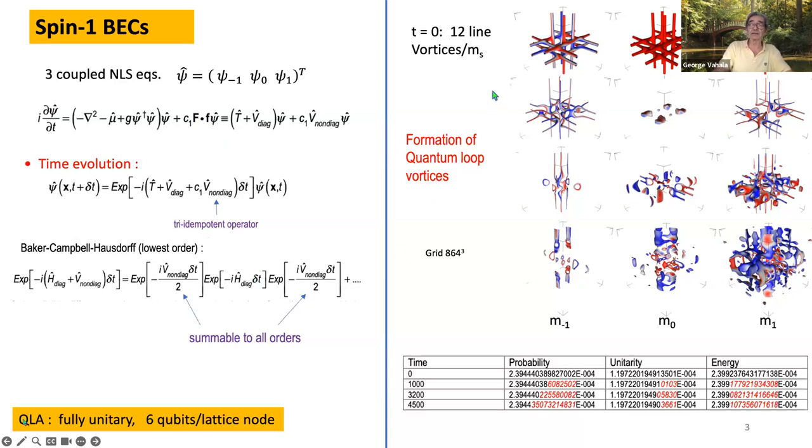Here we're seeing basically the effect of quantum vortices, how initially for the different n plus or minus 1, 0, and then how you get basically vortex reconnection and going into turbulence.